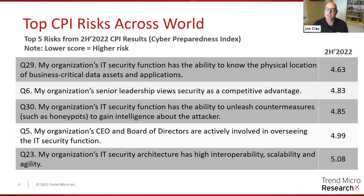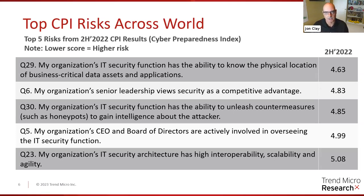The fifth preparedness risk is: my organization's IT security architecture has high interoperability, scalability, and agility. Today, a lot of security products are siloed — you probably have multiple vendors in your organization, and their products tend not to be interoperable and are difficult to scale. Survey respondents felt that improving this would be better for their organization.